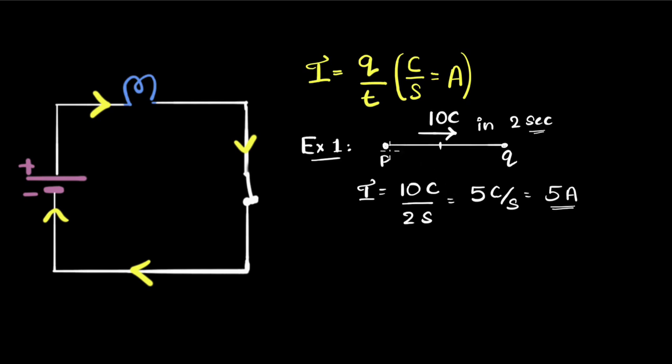What is the direction of this current? Is it from P to Q or Q to P? Well, remember, direction of the current is in the opposite direction of the flow of electrons. So the current is this way, Q to P.